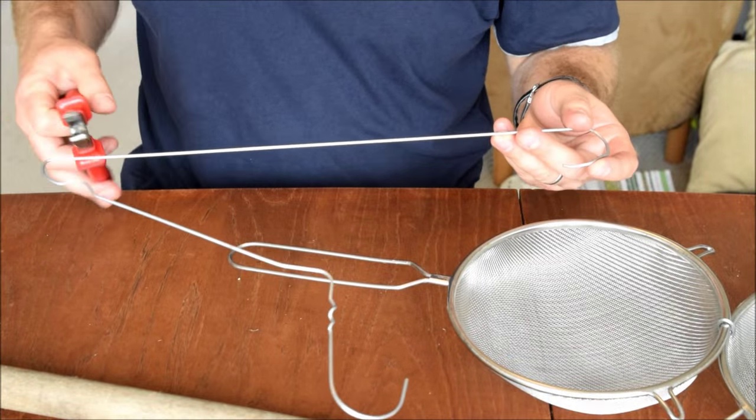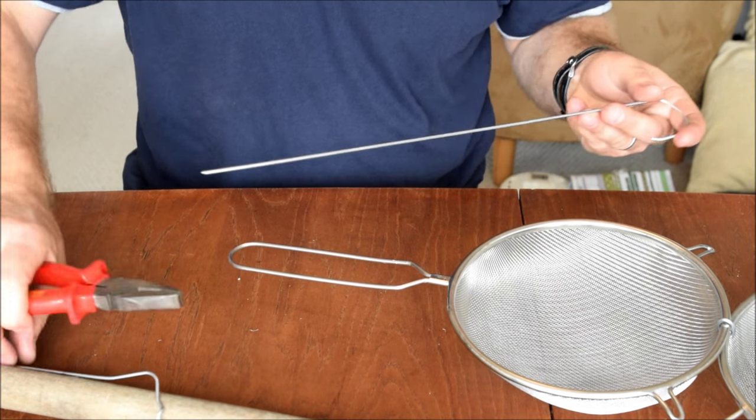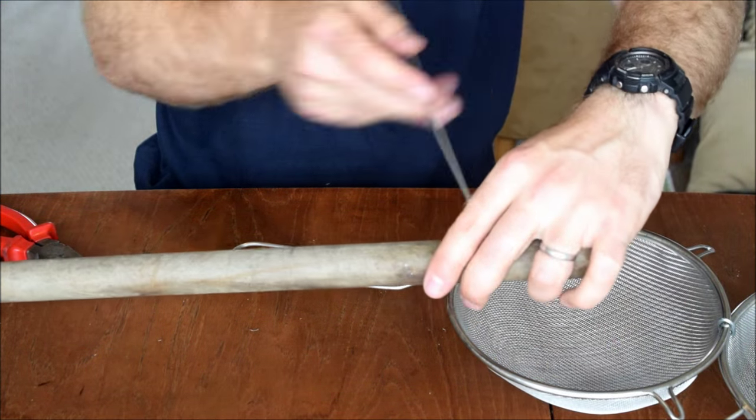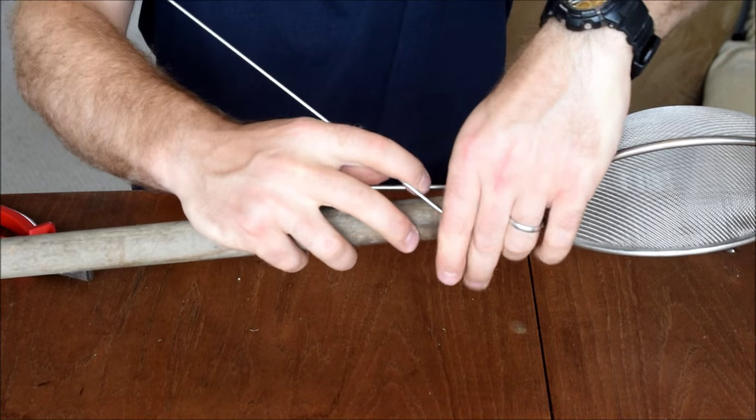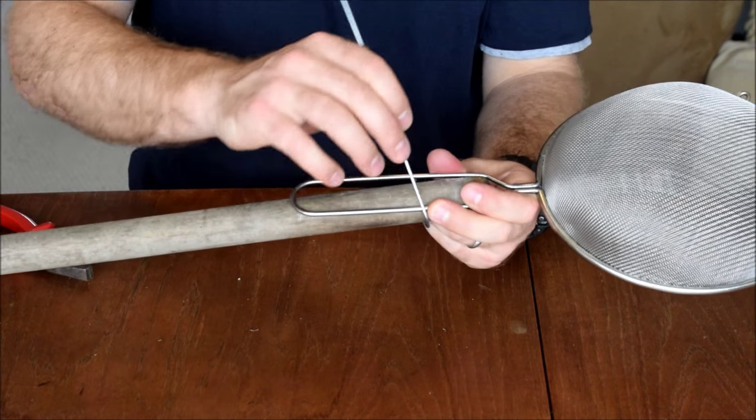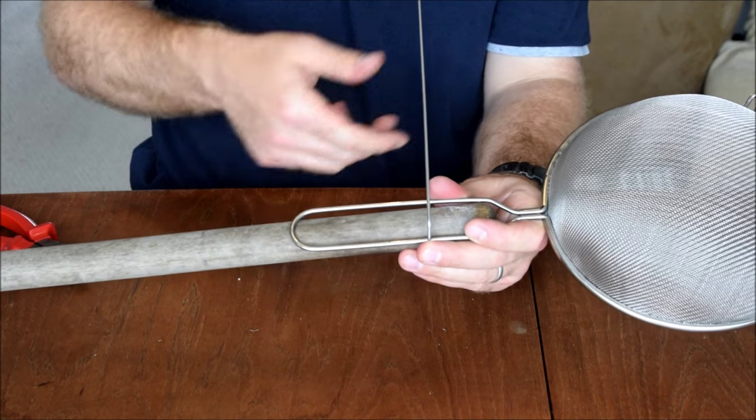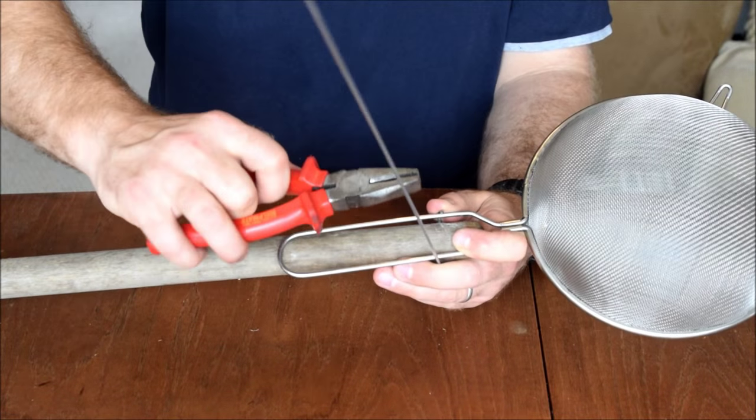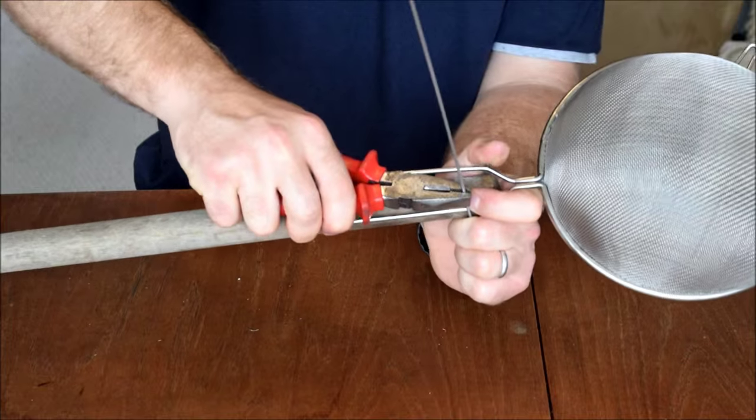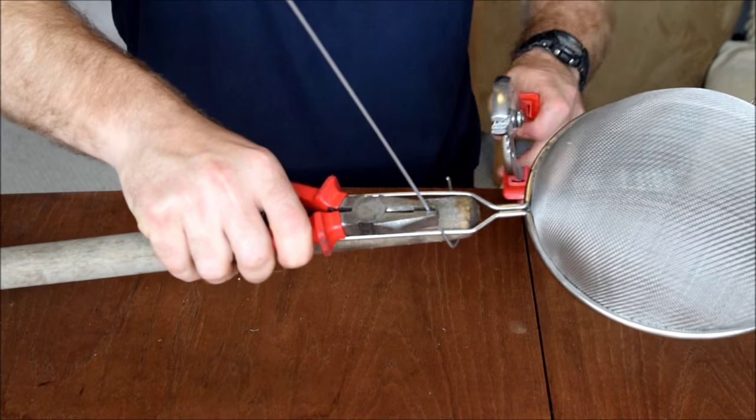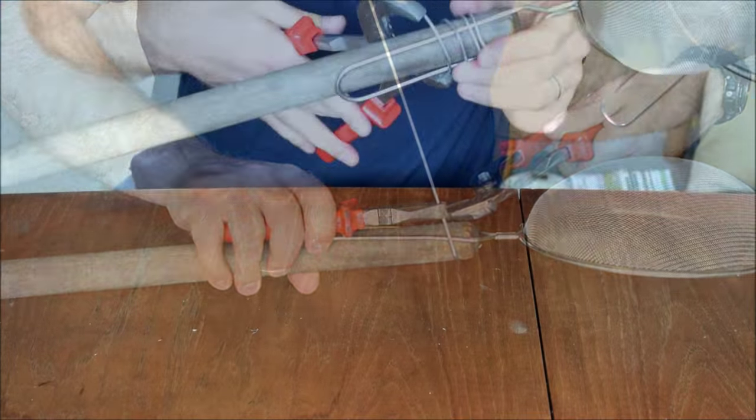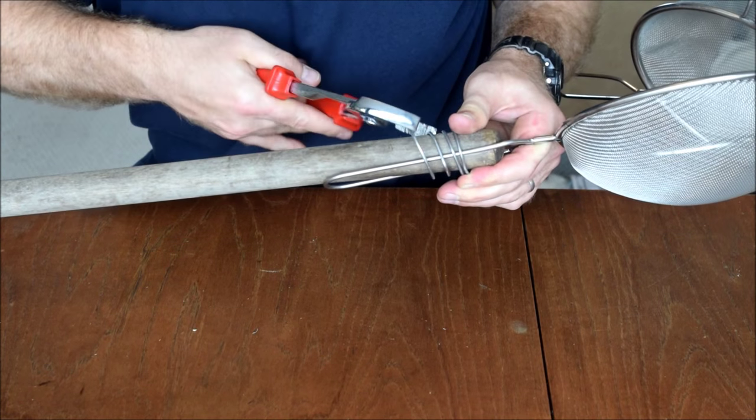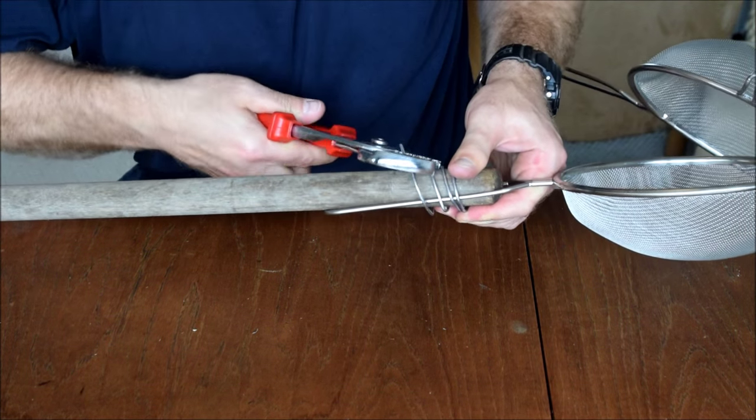The next step is to take another length of wire off the coat hanger. And we're going to wrap this round the broom handle and one of the handles of the sieve, and that's going to go round and round to hold it in place. It is quite tough getting this to bend sufficiently, so there may be some advantages to using slightly thinner wire if you've got it available.